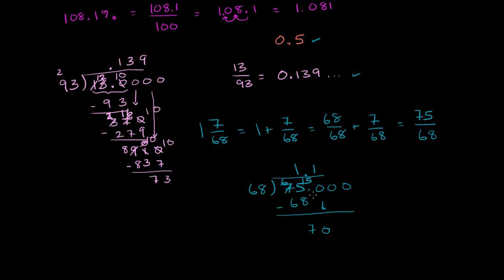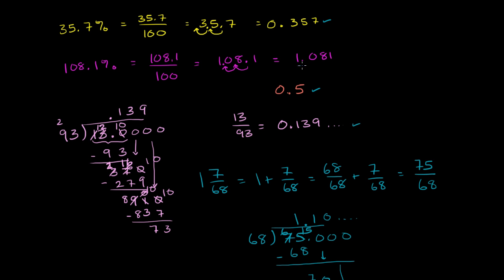68 goes into 70 one time. We've actually done enough to figure out how this compares. 1 times 68 is 68, we subtract, we get 2 here. Bring down another 0. 68 doesn't go into 20 at all, it goes 0 times. So we already see it's at least 1.10, and we're going to keep going as we keep dividing. But we see that this value is already greater than the 1.081.